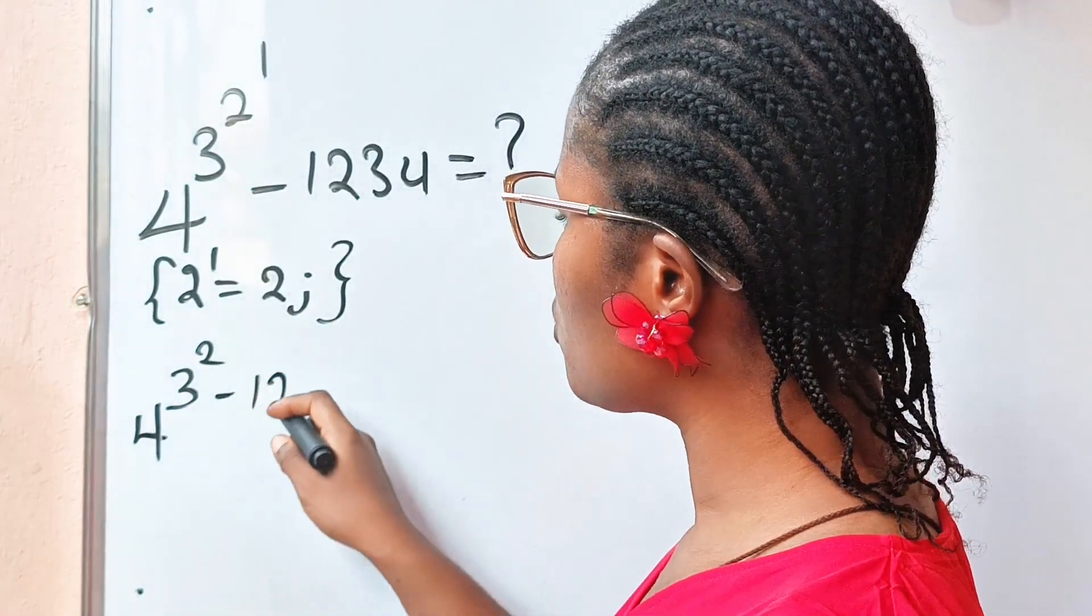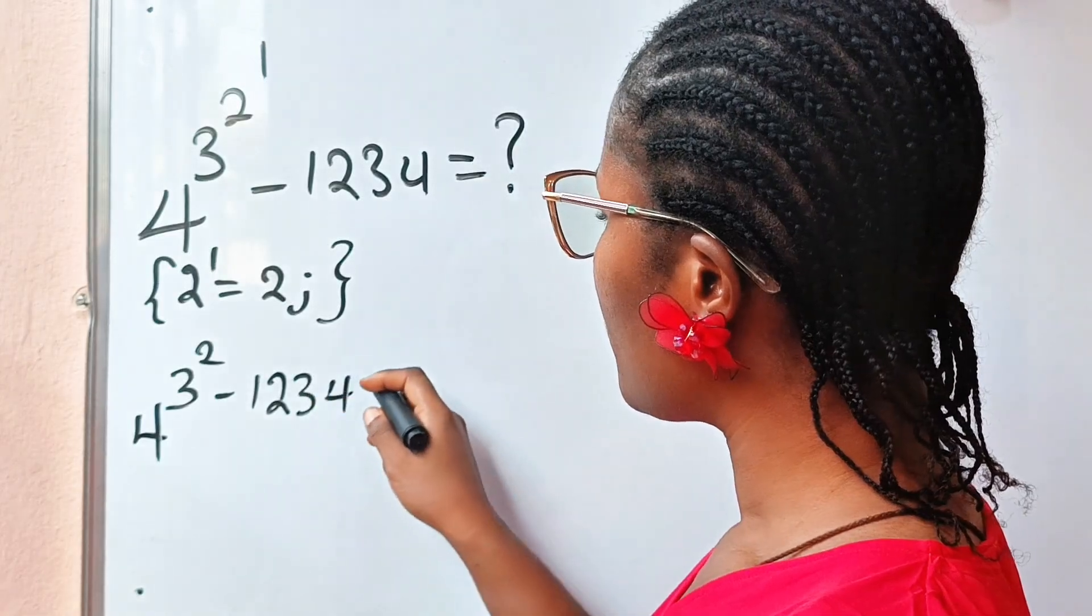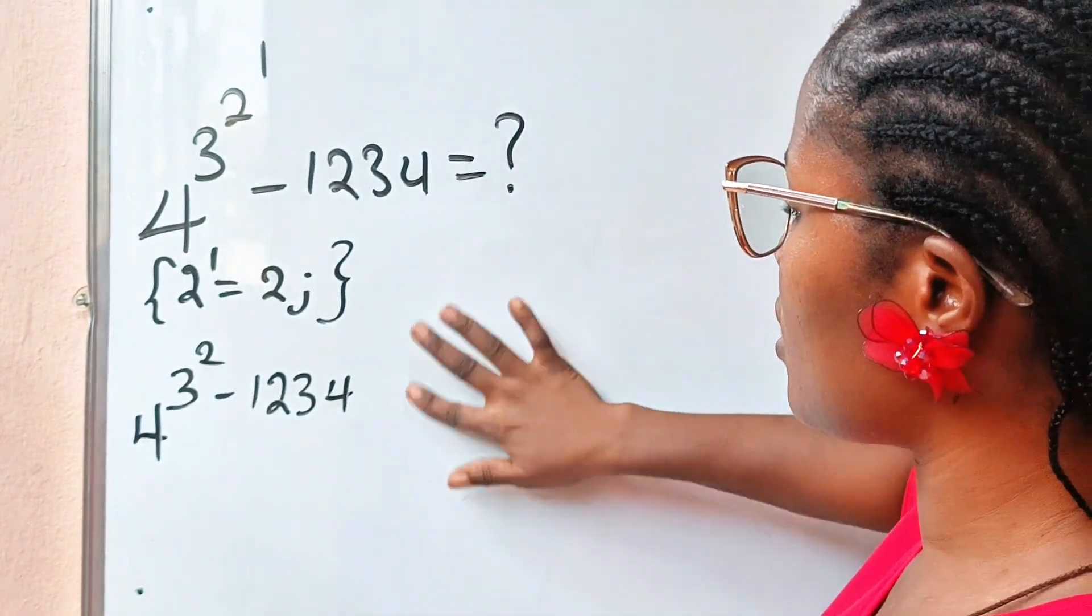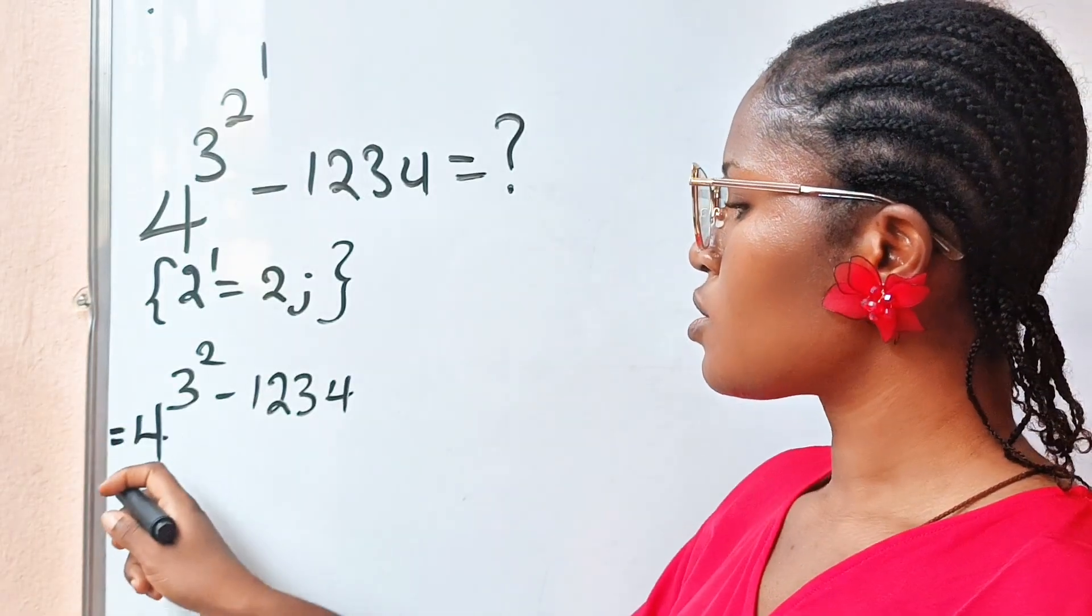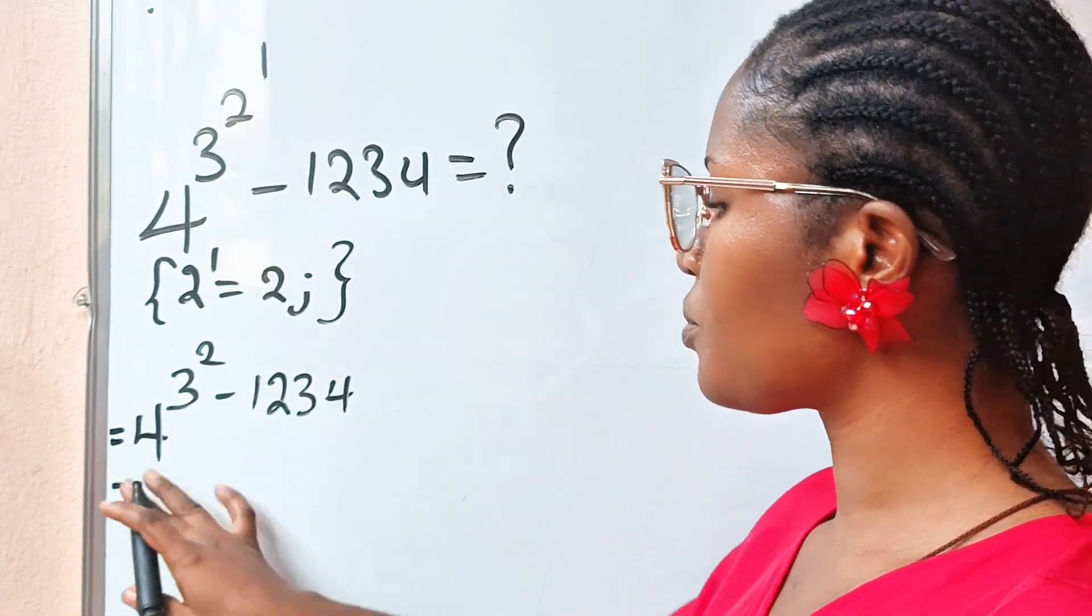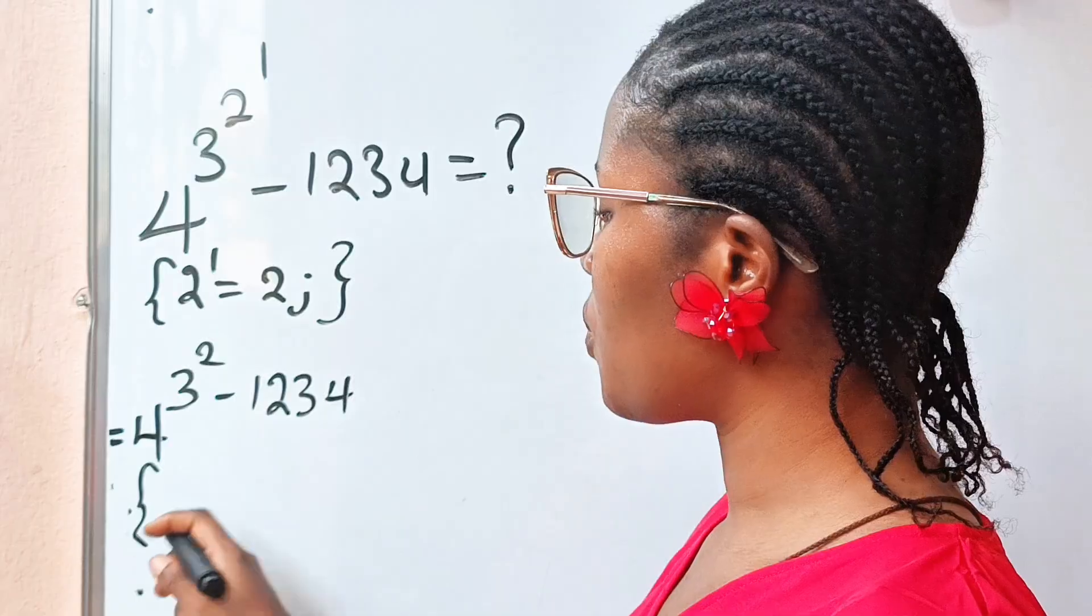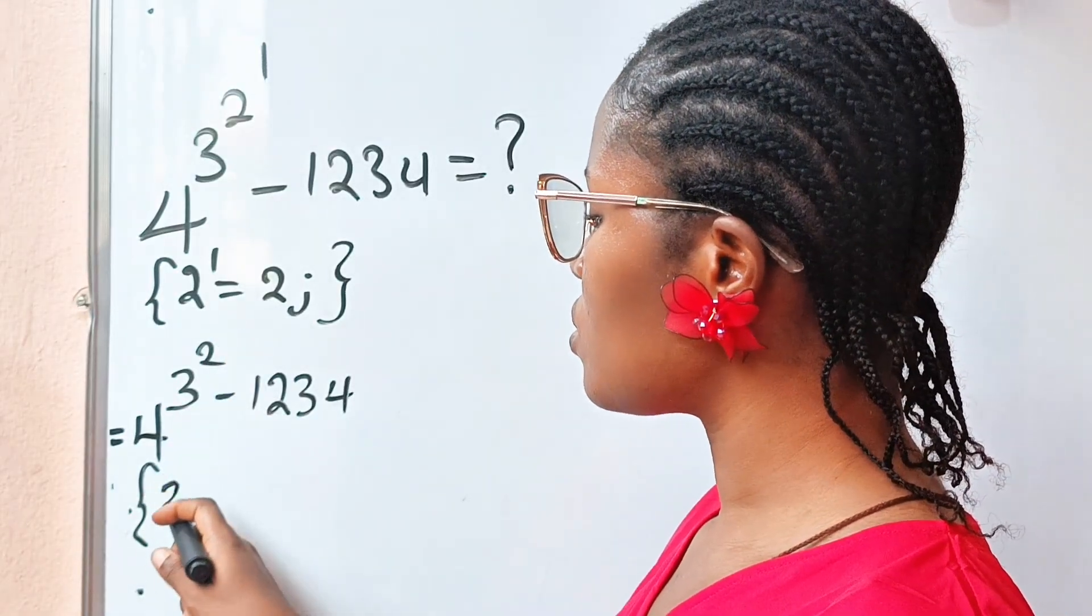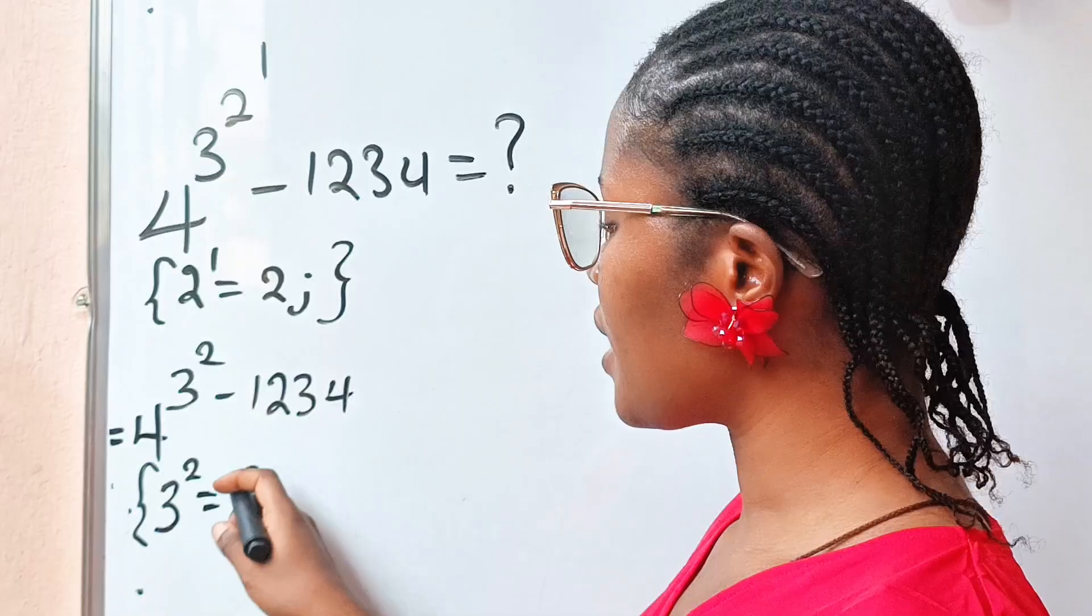Minus 1234 is equal to what? Let me just skip this side. So, this is equal to... Now, at this point, we are supposed to do 3 to the power of 2, which is 9.